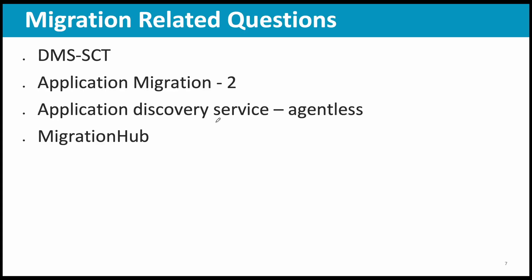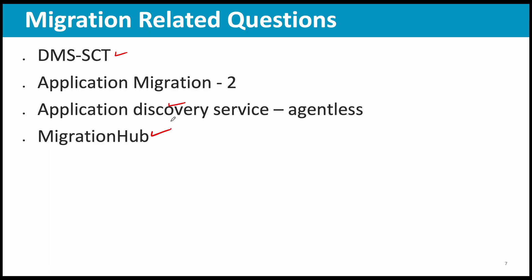Now the most important part — topics from which I got questions. There were several migration-related questions: Database Migration Service, Schema Conversion Tool, Application Migration Service, Application Discovery Service (specifically agentless discovery), and Migration Hub. For storage: S3 storage classes — choosing between Glacier Deep Archive versus S3 Infrequent Access. FSx for Lustre had a question. Setting up static websites and routing traffic using Route 53, cross-region replication, and EFS — choosing between General Purpose and Max I/O modes.